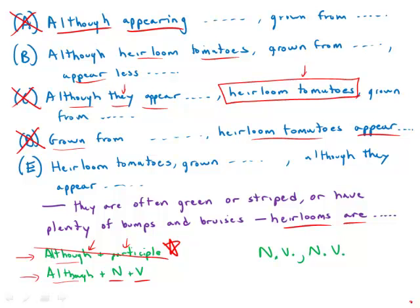And then in E what we have is heirloom tomatoes, a noun, and then a modifier—grown from—so that modifies it.